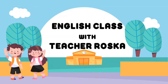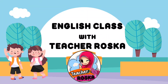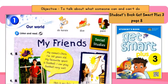Assalamualaikum and good morning. Welcome back to English class with teacher Roska. Our lesson today is from Unit 1, Our World. Our objective today is to talk about what someone can and can't do. Please refer to student's book CatSmart Plus 3, page 8.